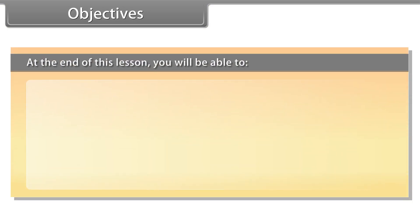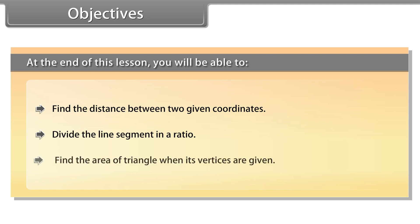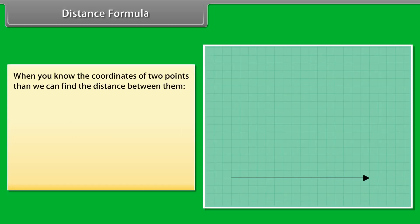At the end of this lesson, you will be able to find the distance between two given coordinates, divide the line segment in a ratio, and find the area of triangle when its vertices are given.